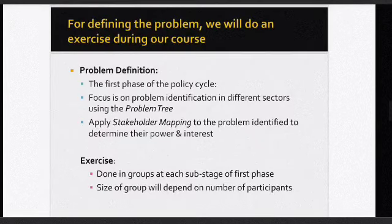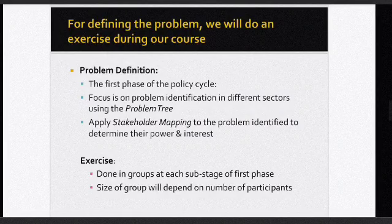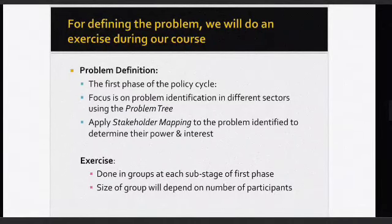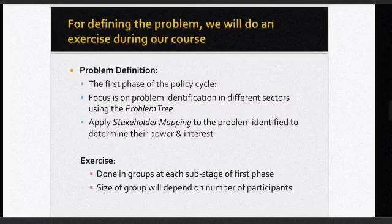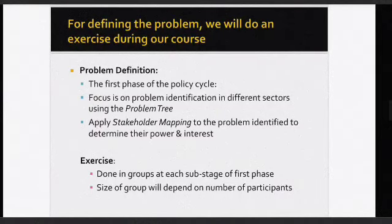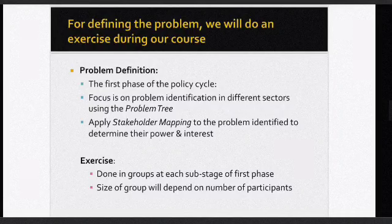For defining the problem, we'll do an exercise. Think about your current workplace — there are many policies there. What are the problems you see in those policies? Is it about employee tardiness, insubordination, benefits? The first phase of the policy cycle focuses on problem identification. You should know the problem in different sectors using a problem tree — identifying roots as causes and branches as effects. You can also apply stakeholder mapping to identify their power and interest.